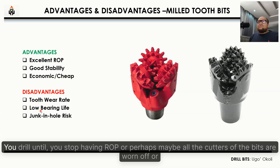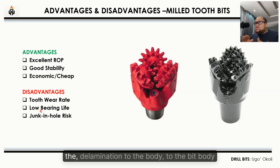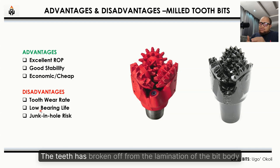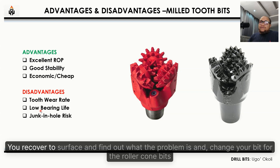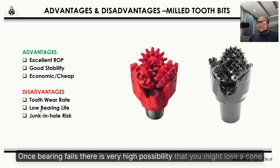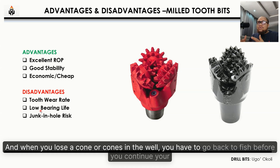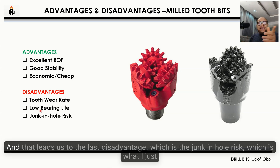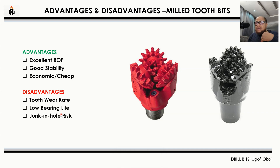For fixed cutter bits, you don't worry about moving parts — you drill until you stop having ROP, perhaps all the cutters are worn off or the teeth have broken off from the bit body. You recover to surface and find out the problem. For roller cone bits, once the bearing fails there is a very high possibility of losing a cone in the well. You have to go back and fish before continuing drilling — leading to the junk-in-hole risk.